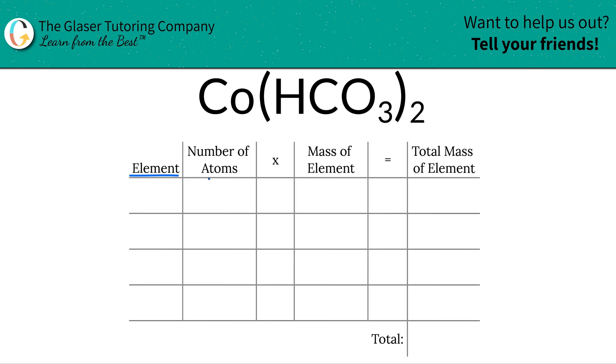So the first thing I see is I have to write down the particular elements I see in the compound. So we have cobalt, we have hydrogen, we have carbon, and we have oxygen.